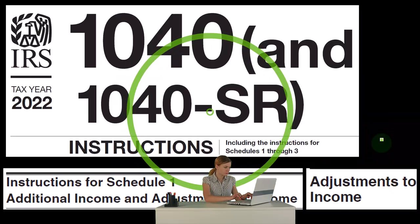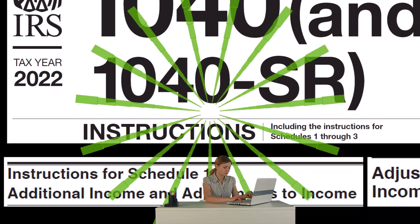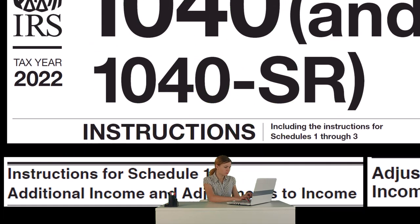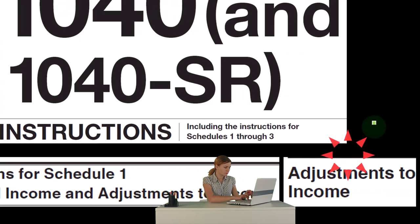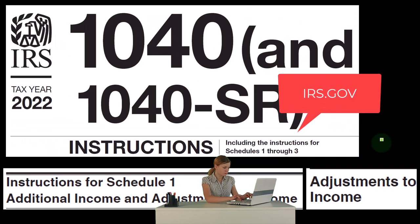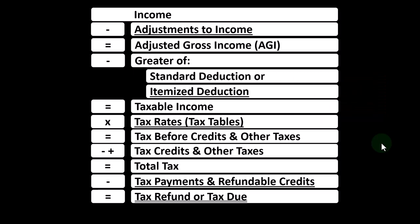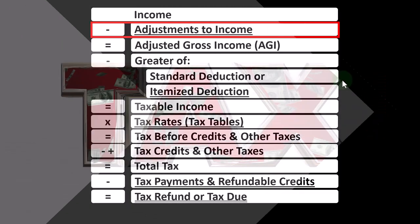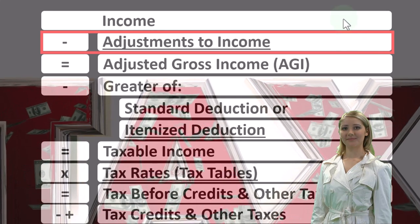Most of this information can be found in the Form 1040 instructions, tax year 2022, specifically the instructions for Schedule 1: additional income and adjustments to income. The adjustments to income section can be found at irs.gov. Looking at our income tax formula, we're focused on the adjustments to income.